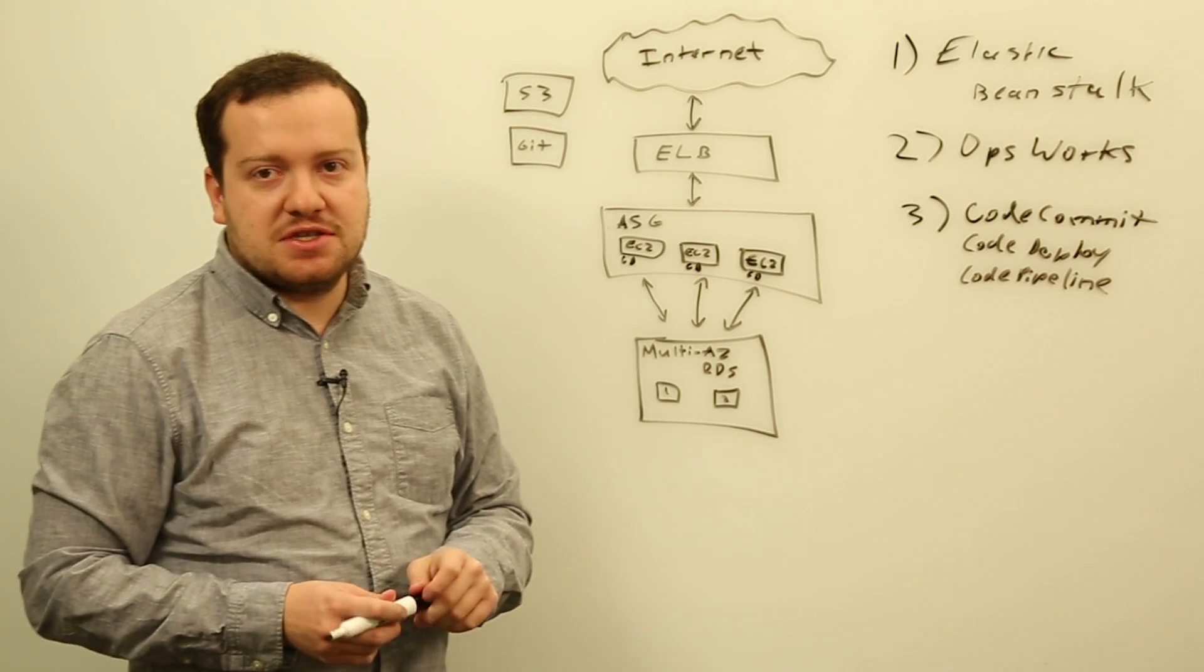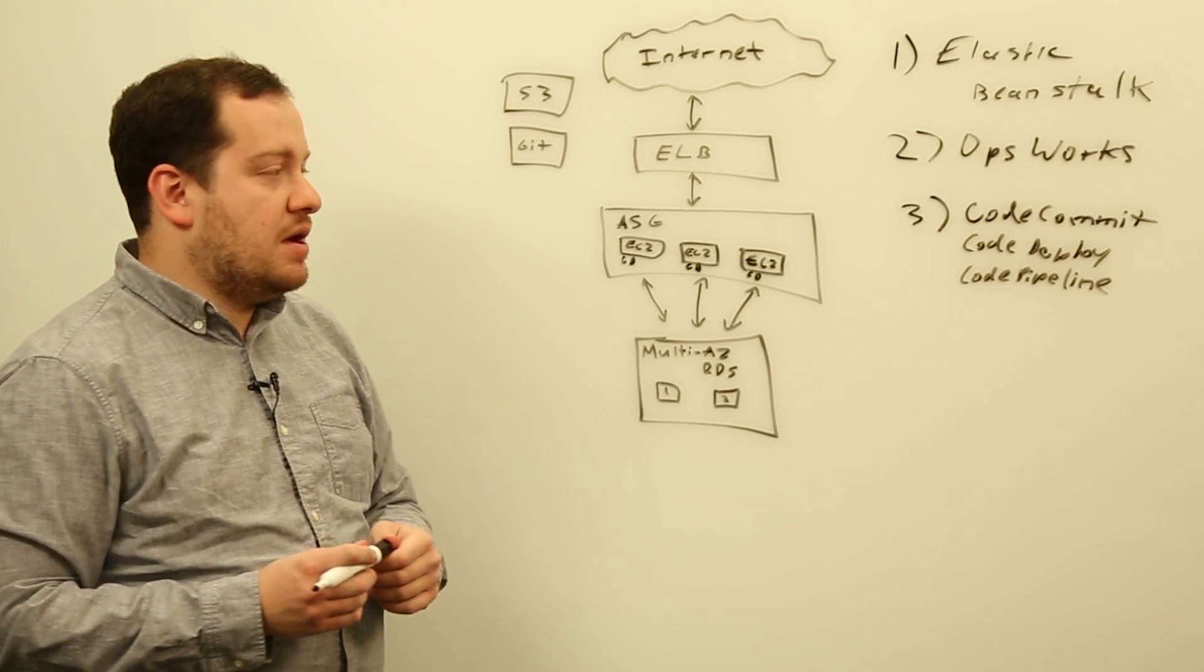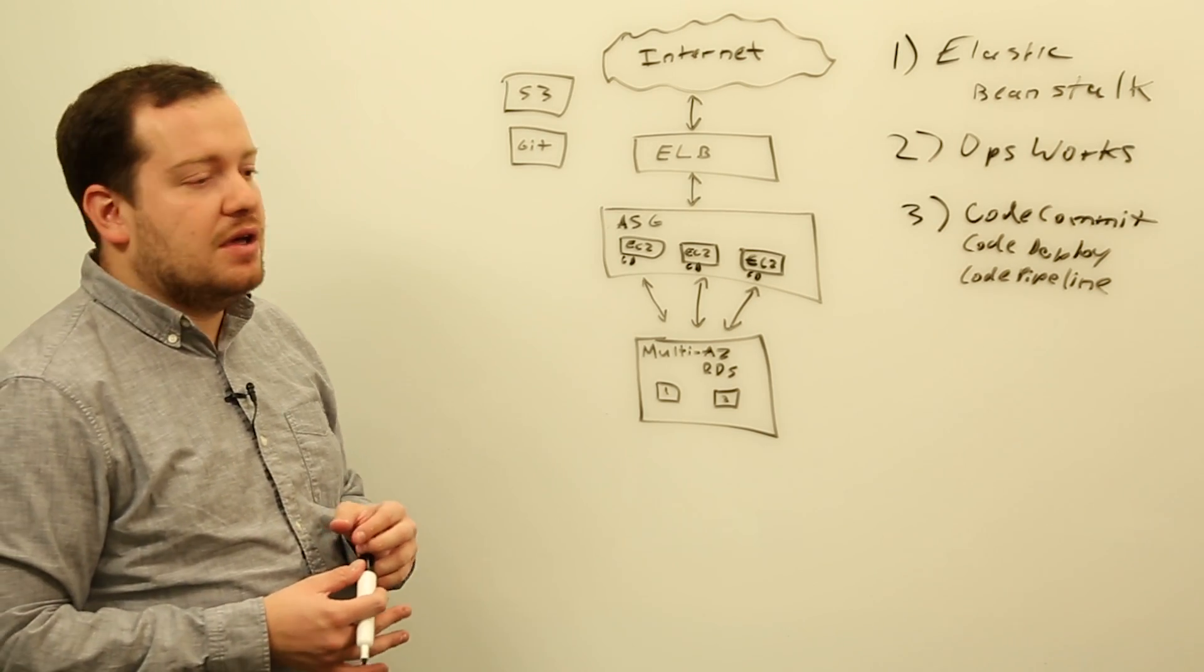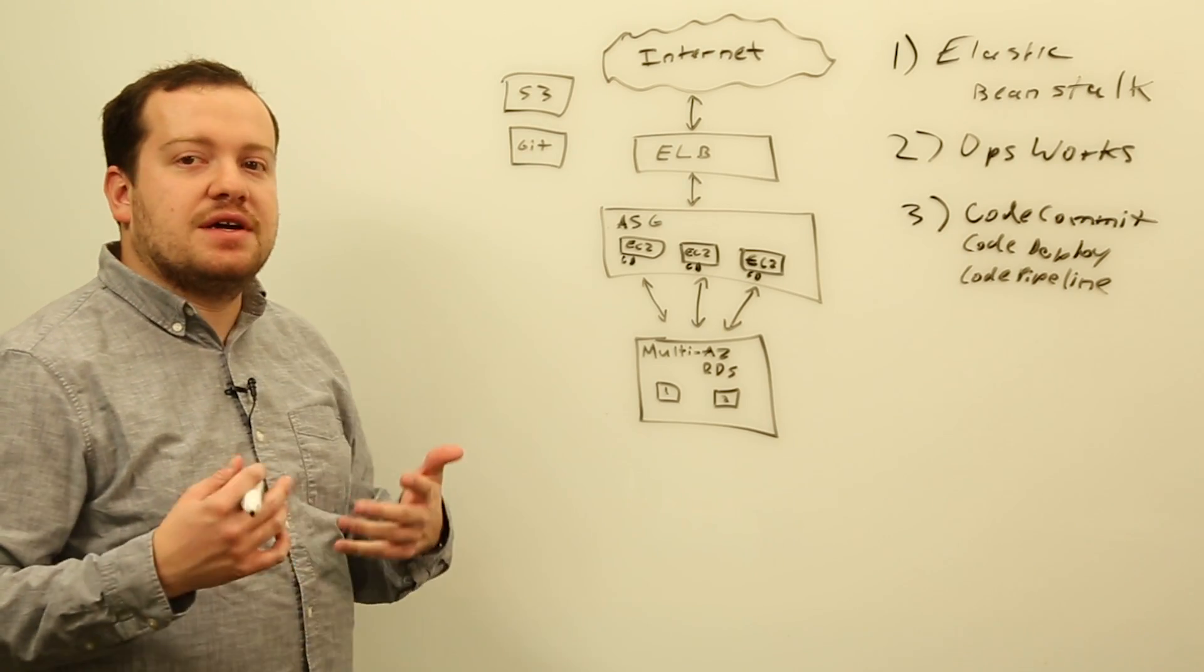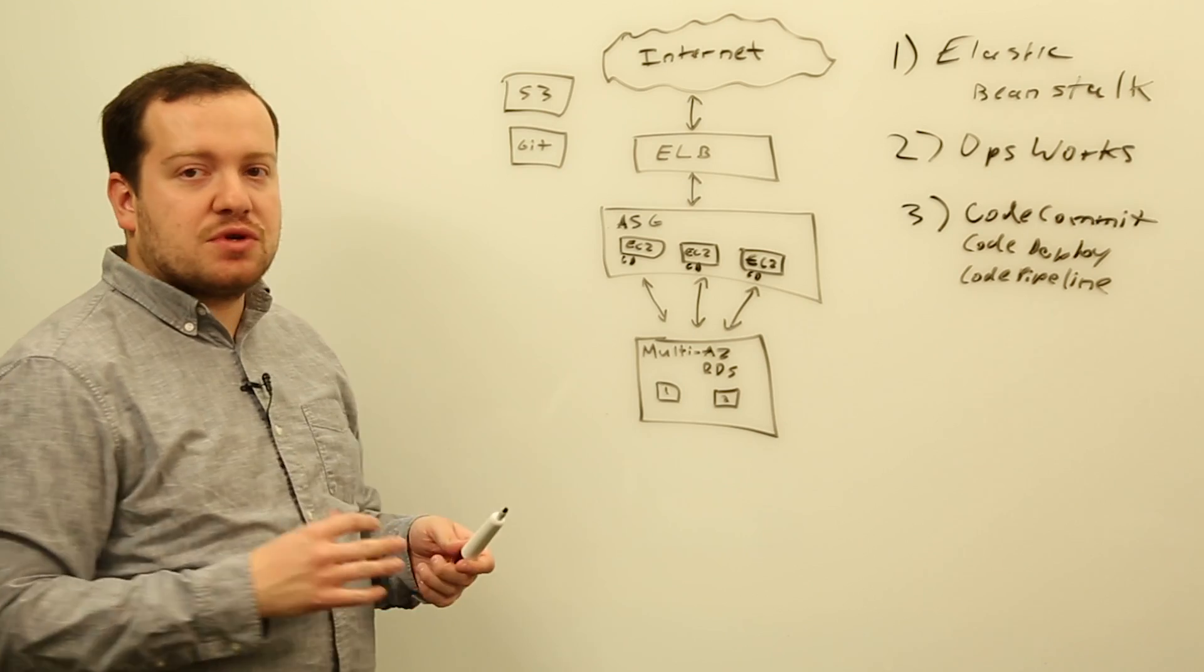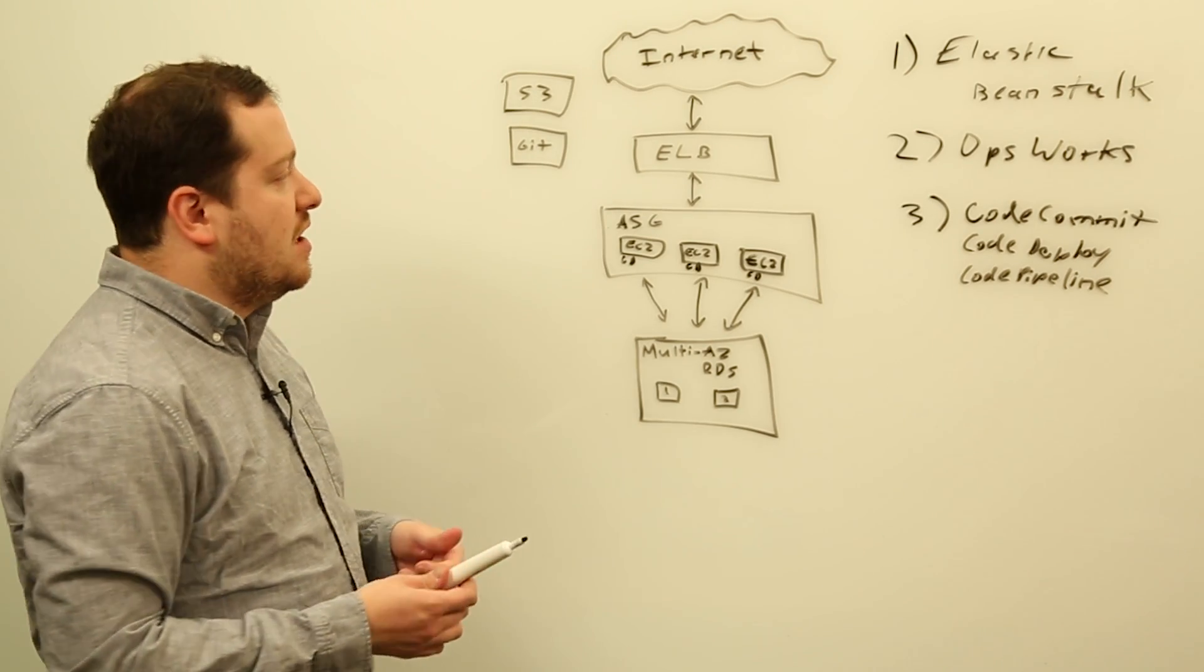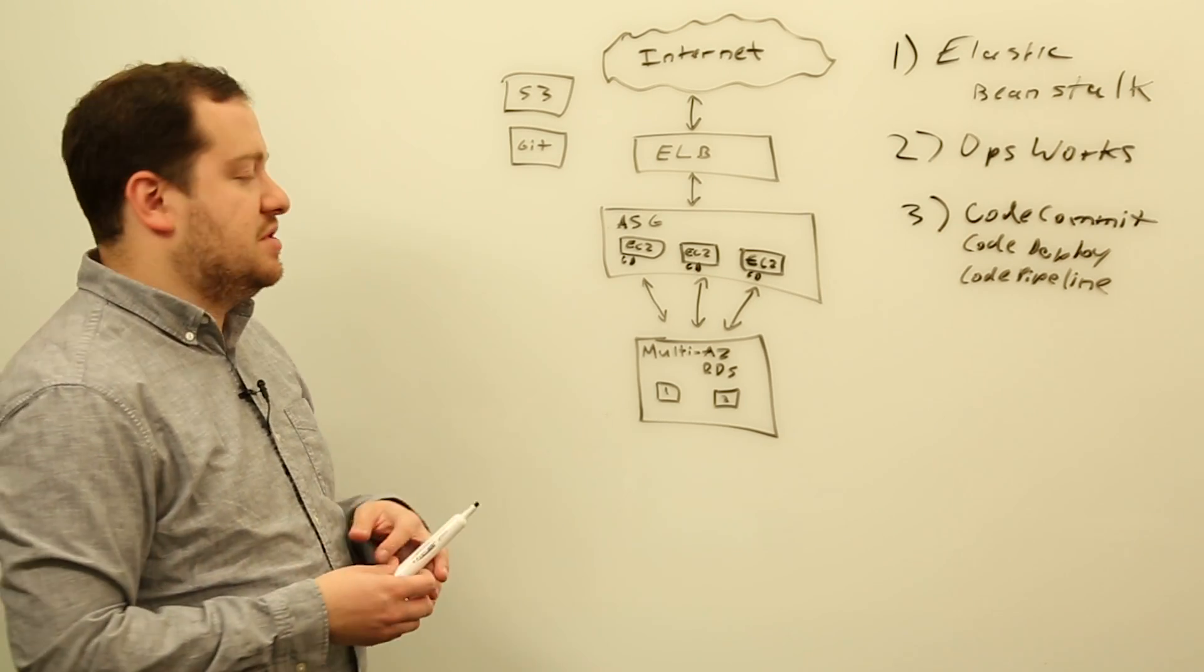So AWS CodeCommit is our fully managed Git version control system. It's fully compatible with Git. You can use the same Git command line tools that you're typically used to. It's got a web interface as well. It's got integration with our identity and access management system. And it supports large objects, and there's no limits on the size of the repositories. So it's a great service, and it'll allow you to not have to manage your own Git repository essentially.